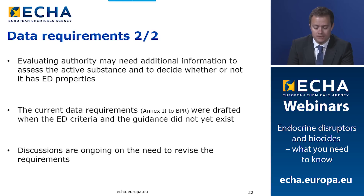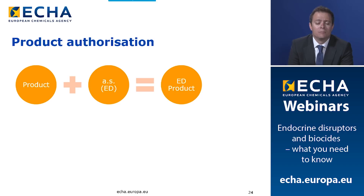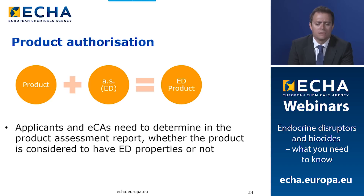Regarding product authorization: a product containing an active substance identified as having endocrine disruptor properties will automatically also be considered an endocrine disruptor. Therefore, applicants and evaluating competent authorities must determine in the product assessment report whether the product is considered to have ED properties. If the active substance within the product is an endocrine disruptor, all the consequences described earlier apply — for example, not being authorized for use by the general public if it meets the ED criteria for non-target organisms.